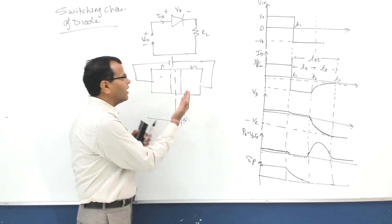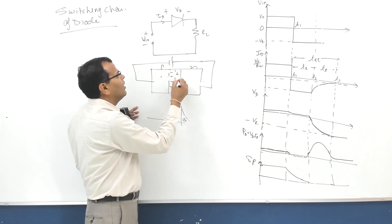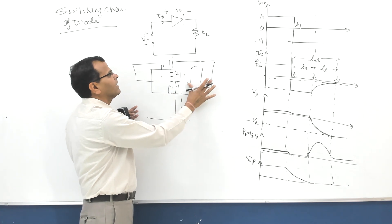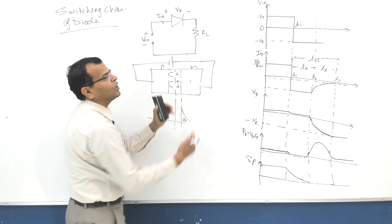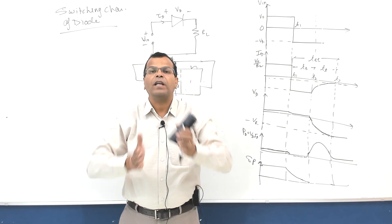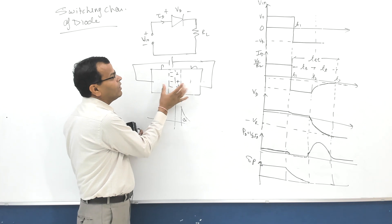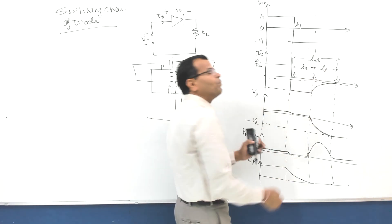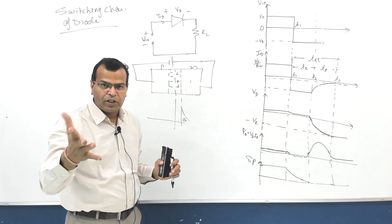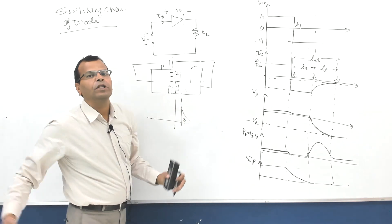Once all the excess minority carriers are shifted from one side to the other, the expansion of the depletion layer will start. When reverse biasing occurs, the width of the depletion layer expands, but only after removal of all the excess minority carriers stored in the layers. This is the period of expansion. After T1 to T2, all excess minority carriers have been removed - the storage capacitance, also called diffusion capacitance, has been discharged. After that discharge, expansion of the depletion layer begins.